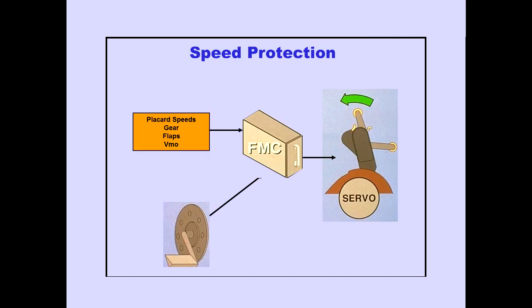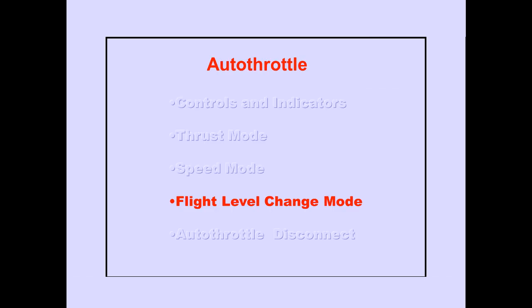The autothrottle will reduce to idle in an attempt to prevent placard speeds from being exceeded. An airflow sensor furnishes angle of attack information to provide minimum airspeed protection. Now let's discuss the flight level change mode.